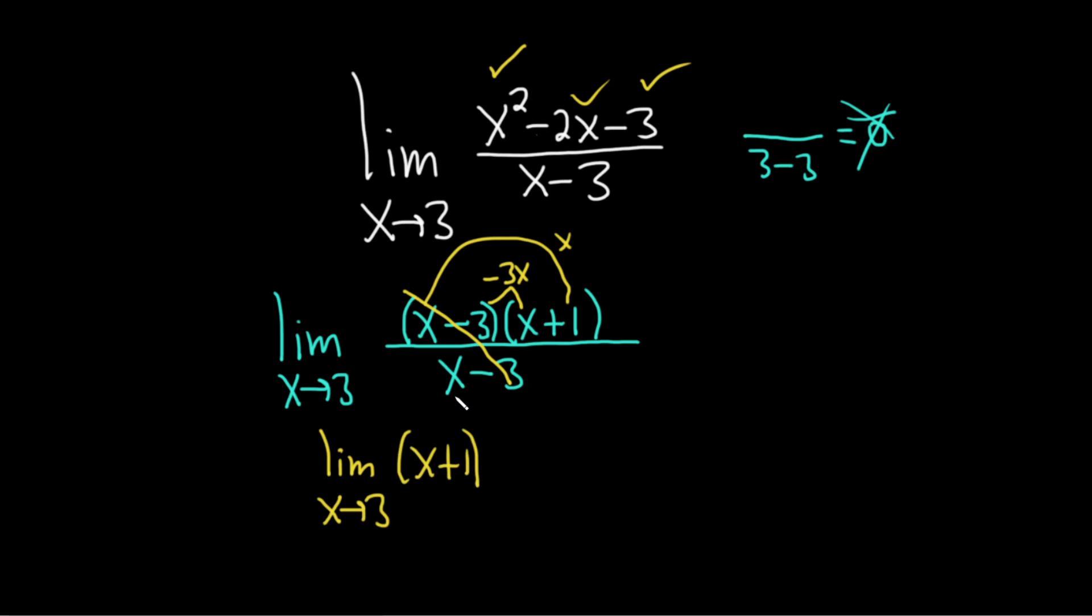And at this point, we can go ahead and just plug in the 3 for the x. When we do that, we always drop the limit sign. So this will be 3 plus 1, and that's equal to 4. That would be the final answer.